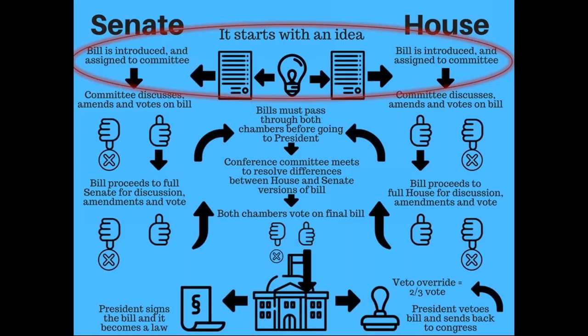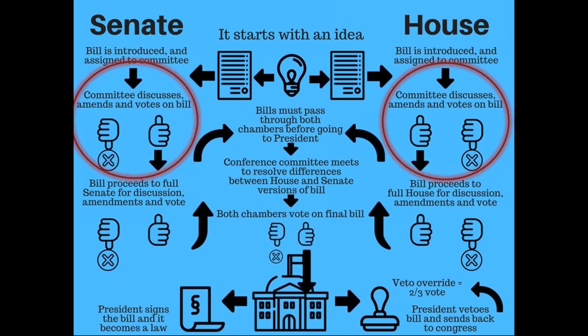Understanding how a bill becomes a law is very important, so you know where in the legislative process you can have the most impact. For a bill to become a law, the first step is for it to be introduced, which can only be done by a member of Congress. The idea for the bill can come from the member themselves, the president, individual citizens, organizations, or companies. The president may put forth a plan, but it's always a member of Congress that submits the actual bill. A member of Congress will take the bill idea and introduce it into their respective chamber. At that point, it receives a bill number and is posted on congress.gov. If you want to follow a bill's progress, you can track them at congress.gov. Once the bill has been introduced, it then goes to committee.